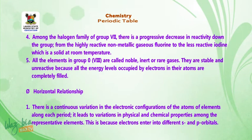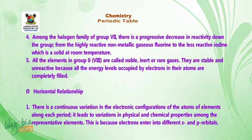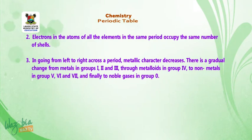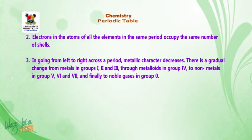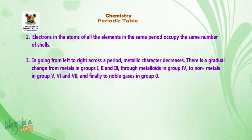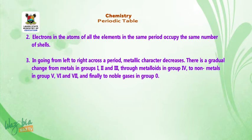Now let us look at horizontal relationship. Number 1: there is a continuous variation in the electronic configurations of the atoms of elements along each period. It leads to variations in physical and chemical properties among the representative elements, because electrons enter into different S and P orbitals. Number 2: electrons in the atoms of all the elements in the same period occupy the same number of shells. Number 3: in going from left to right across a period, metallic character decreases. There is a gradual change from metals in groups 1, 2, and 3, through metalloids in group 4, to non-metals in groups 5, 6, and 7, and finally to noble gases in group 0. After this short break, we will continue from atomic properties.